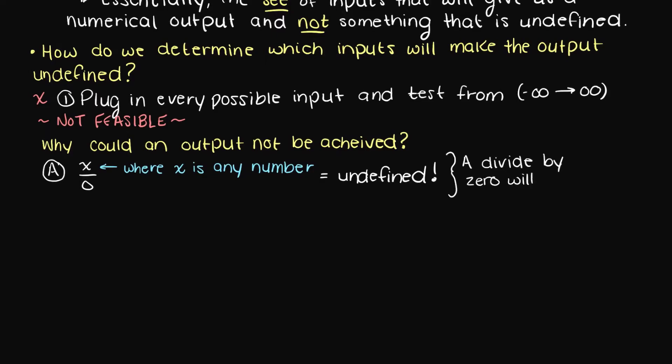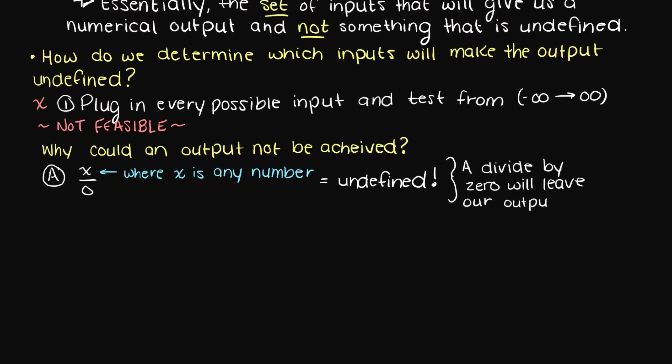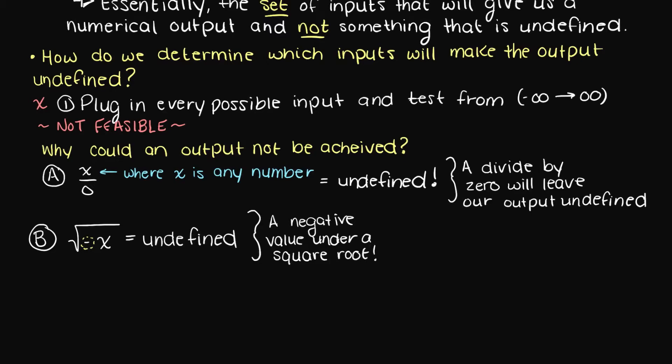Can you think of any other reason that an output could not be found? Well, what about a negative under a square root? Using only real numbers, we cannot solve a negative square root. So, that is reason number two why we could fail to find an answer to our function.